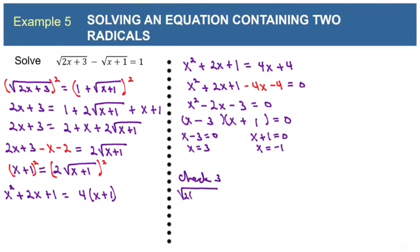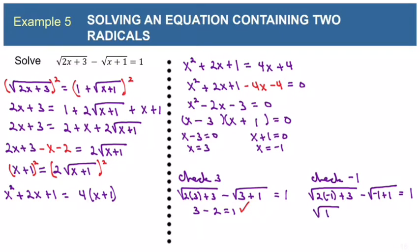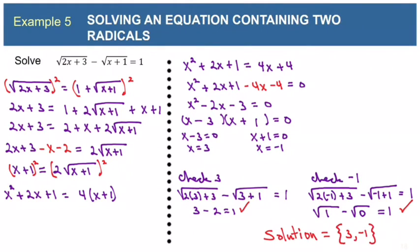Checking x equals 3: 2 times 3 is 6, 6 plus 3 is 9, and the square root of 9 is 3. On the other side, 3 plus 1 is 4 and the square root of 4 is 2. So 3 minus 2 really is 1 — that solution checks. Checking x equals negative 1: 2 times negative 1 is negative 2, negative 2 plus 3 is positive 1, and negative 1 plus 1 is 0, so the square root of 0 is 0. The square root of 1 is 1, and 1 minus 0 is 1 — that solution checks as well. So this time we get to keep both solutions: 3 and negative 1.